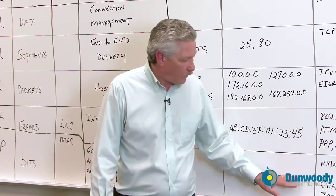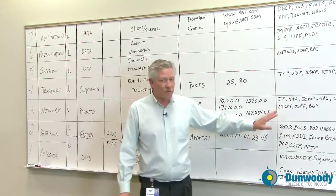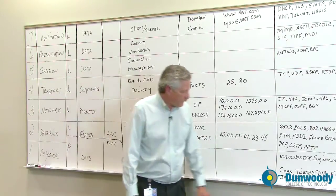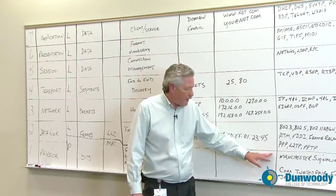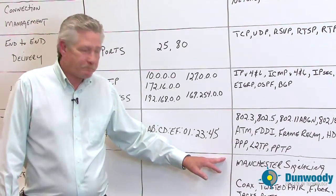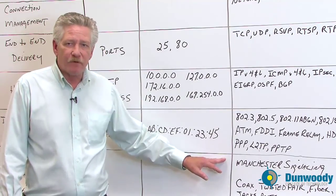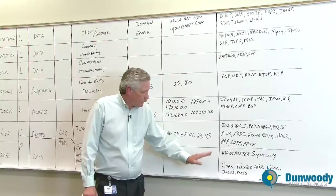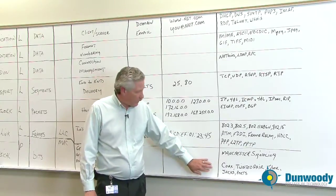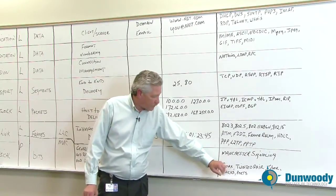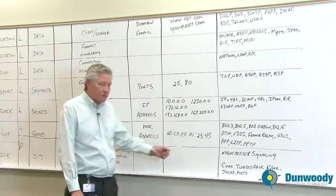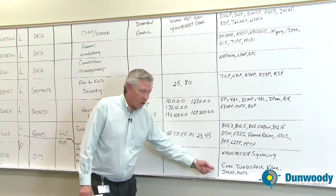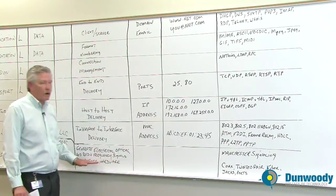Some of the protocols we work with — and these are just a few examples, there are many of them. Down at the physical layer, today we use Manchester signaling, which is done both by synchronization and time. We also define the hardware at this layer, including coax, twisted pair, fiber, jacks, and ports. Things like parallel printers or today's USB printers are also here at the physical layer — it's all about the hardware at this point.